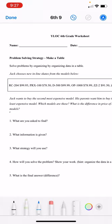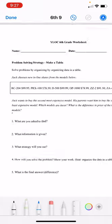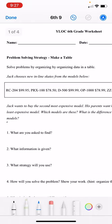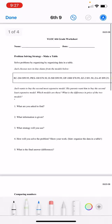So it says solve problems by organizing data in a table. Okay, so Jack chooses new inline skates from the models below. So here we have the models, the name of the models, and the prices.